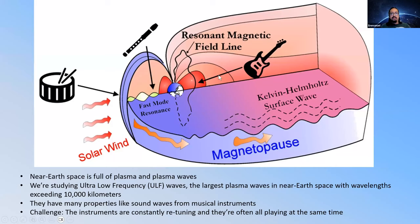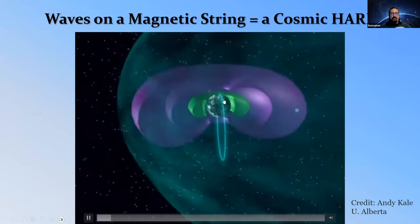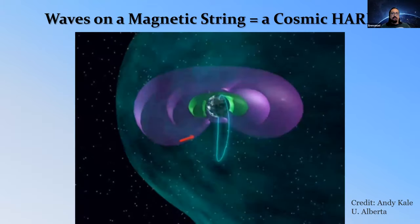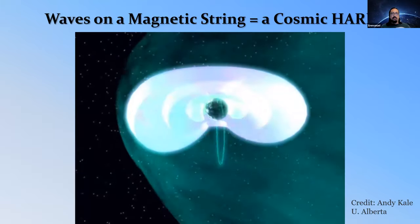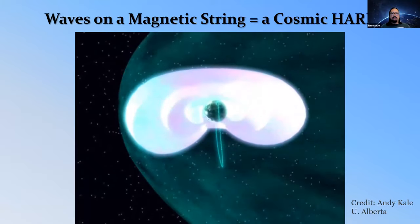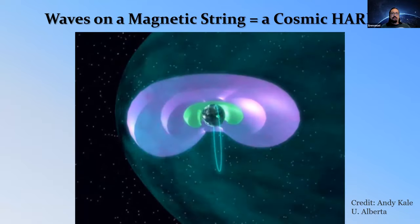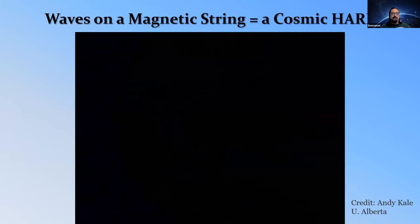The magnetic field lines inside can vibrate like guitar strings, a flute, or a clarinet. The waves we're mostly interested in are called ultra-low-frequency waves, and they occur in this region. These waves on a string can impact space weather through interactions with particles. There are particles streaming from the sun that come into contact with Earth's magnetic fields. Within Earth's magnetic field there are even more particles — electrons and protons — which we call plasma. The vibrating field lines can accelerate these particles.